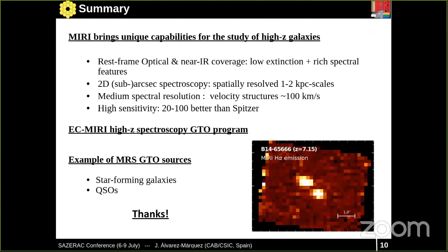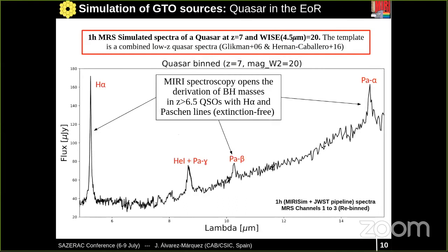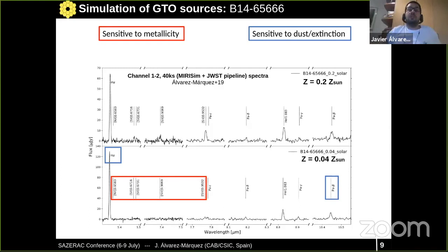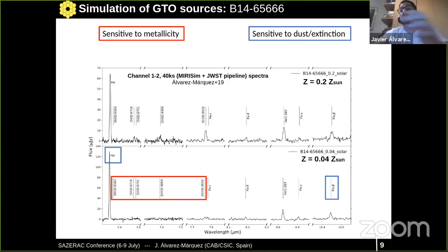Thank you very much, Javier. While waiting for questions — how rapidly will this GTO data be made publicly available? The GTO data will have a one-year proprietary period. There is a question from Renske Smith: do you expect to be able to do kinematics with H-alpha in B14? It is possible — if there are outflows, we may be able to detect something. As I mentioned, the resolution will be close to 100 km/s, so if there are kinematics larger than 100 km/s we will be able to resolve the H-alpha emission line and perform kinematic analysis.